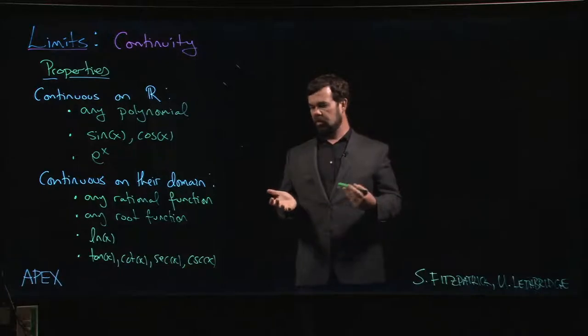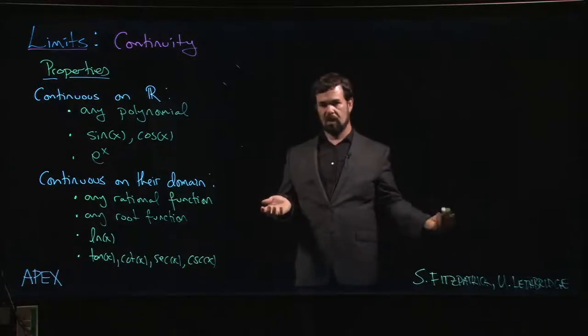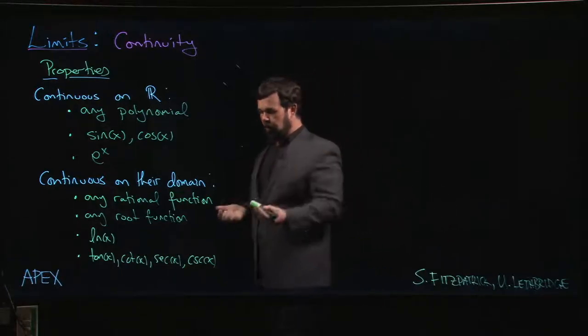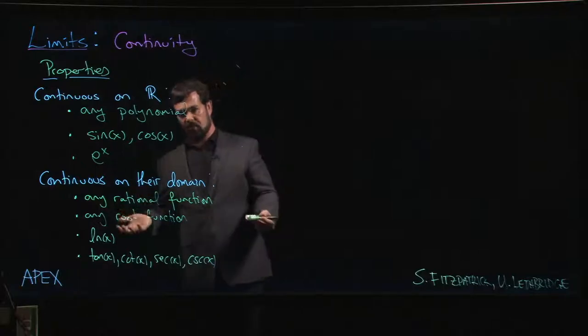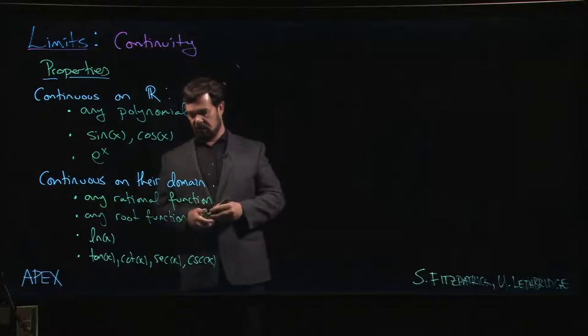When you first look at limits for common functions, you realize, well, all we're doing here is plugging in the numbers - why am I even bothering to do this? And then eventually you look at these examples like zero over zero, these indeterminate forms, where okay, yes, I guess we do need the limits to understand these things.